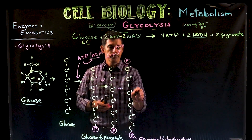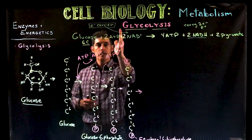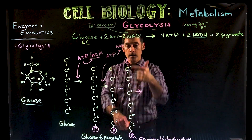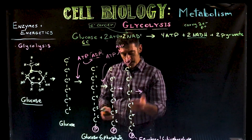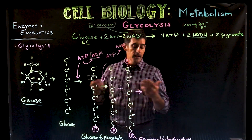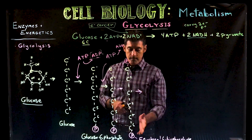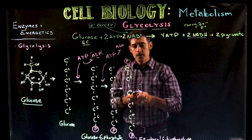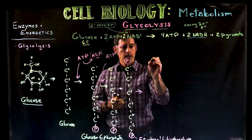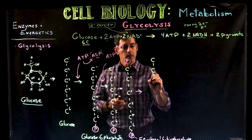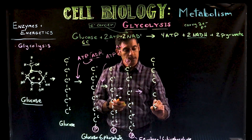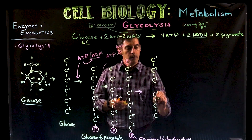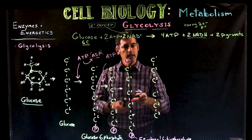That's the first part of glycolysis: glucose and two ATP produce a sugar molecule with a phosphate attached to each end. All the oxygens and hydrogens are still present, just rearranged. Now comes the lysis step, where fructose-1,6-bisphosphate gets broken into two three-carbon molecules.